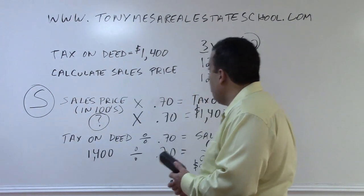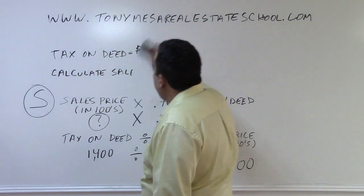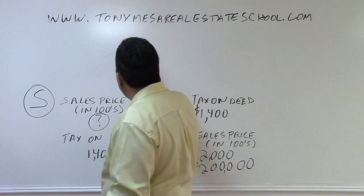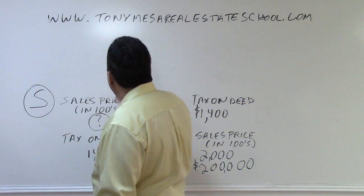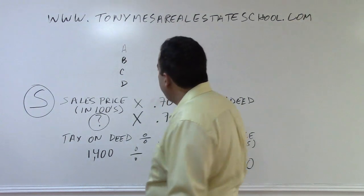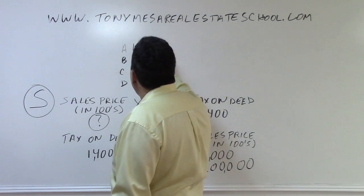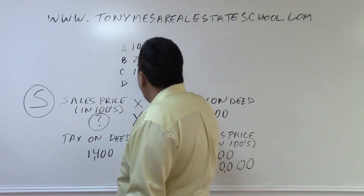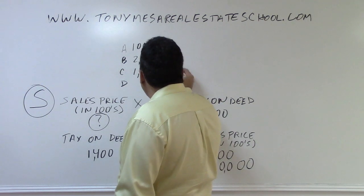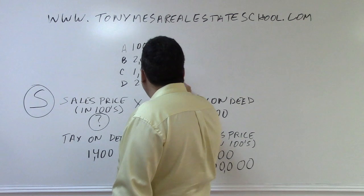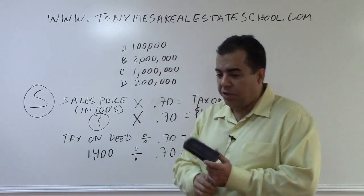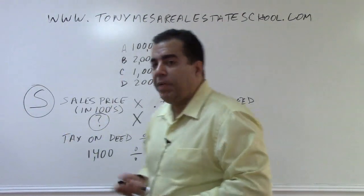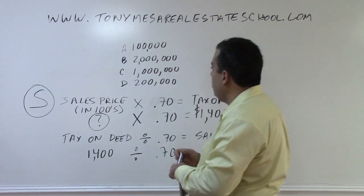Another point: when you're taking the state exam and have a challenge on a math problem, remember you always have four answer choices — A, B, C, and D. If you get stuck, you can use the answer choices to figure out the correct answer. If I get confused by going in reverse, I'm not going to give up — I'll take the time and use the answer choices.